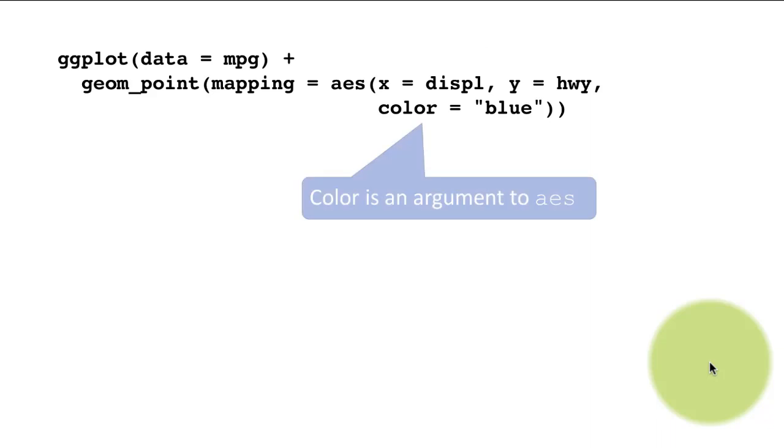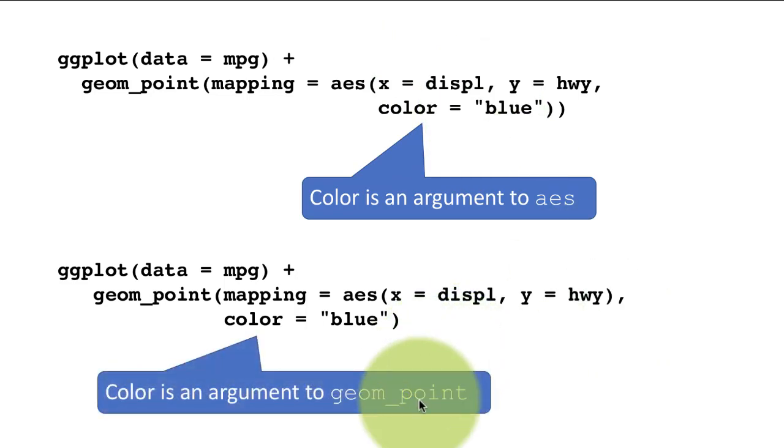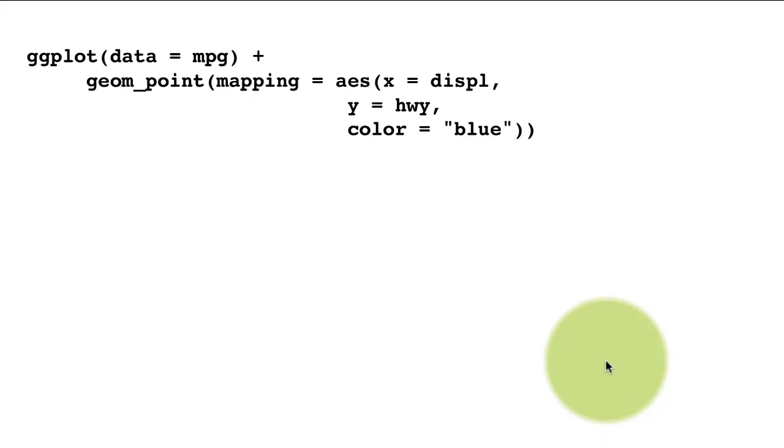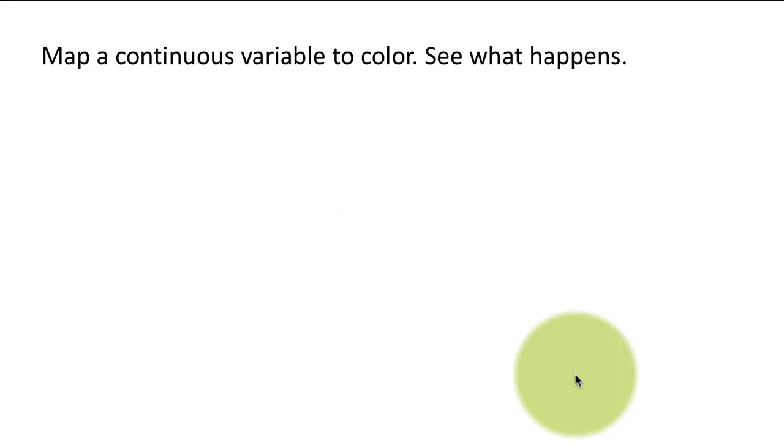So this is important. So I'm just highlighting it here. So this was the first attempt we did where we put color as an argument to AES, and then we got a meaningless display. Now here color is an argument to geom_point. So we just got all the points colored blue.